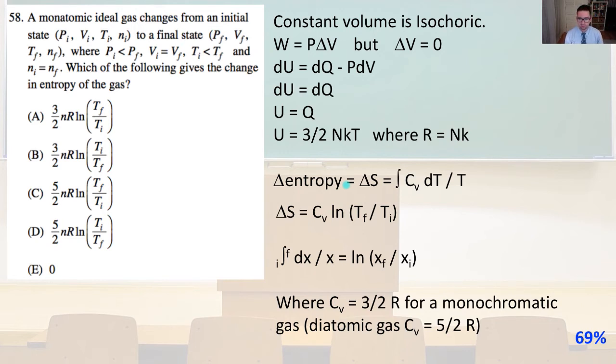and work equals p times the change of volume, but the change of volume equals zero. So du equals dq minus pdv, and du equals dq, and u equals q. So u is going to equal three halves nkT, where r equals nk.